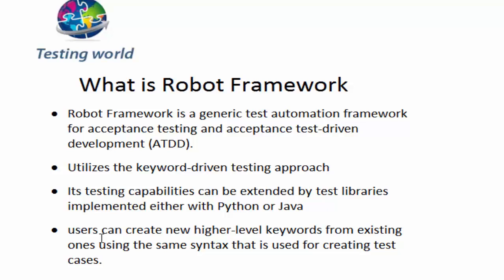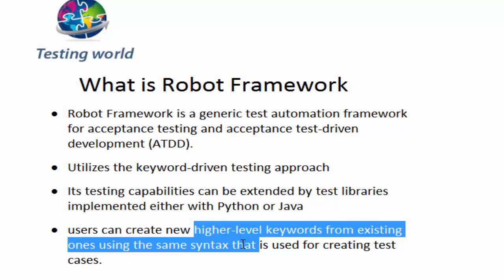Another advantage of Robot Framework is that while it provides many keywords for performing different tasks, we also have the option to create our own keywords. When defining our custom keywords, we can internally use the keywords already provided by Robot Framework. For example, when working on a web-based application, we have 'Open Browser' to open the browser and 'Maximize Browser Window' to maximize it, and we can combine them internally inside our own keyword.